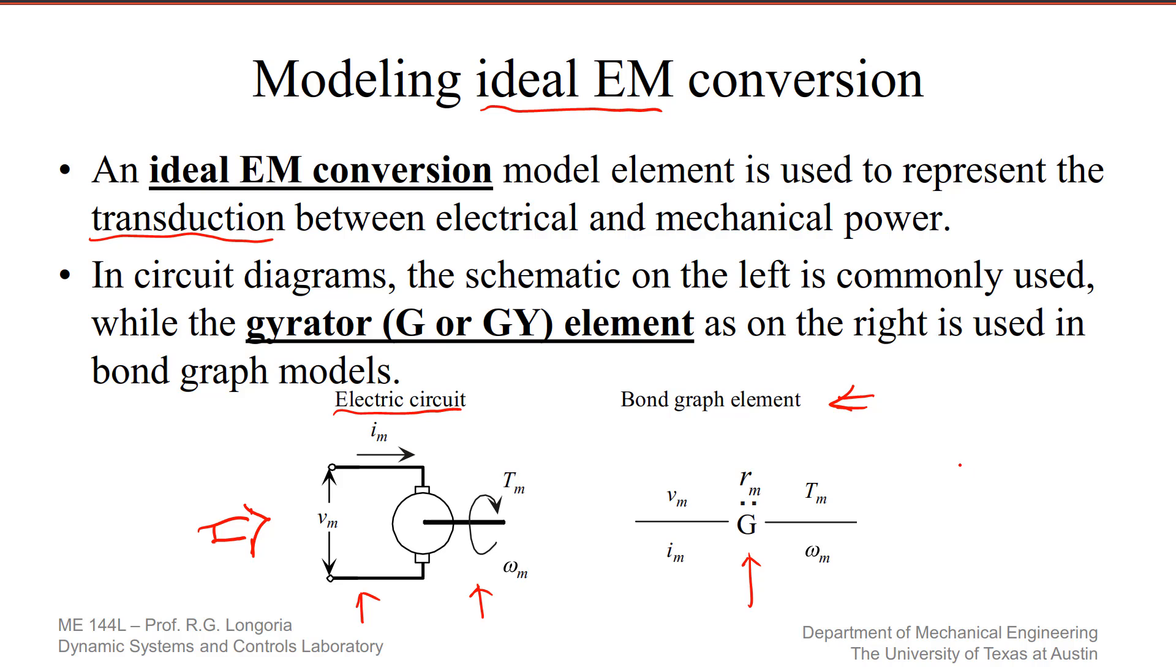The relationship that is inherent to this motor action is that this ideal motor torque can be expressed as a constant, a motor constant, sometimes called a torque constant, times the current in the armature circuit. In a permanent magnet DC motor, RM tends to be a constant value. Note that it's going to have units of newton meters per amp in SI. So that's one of the relationships.